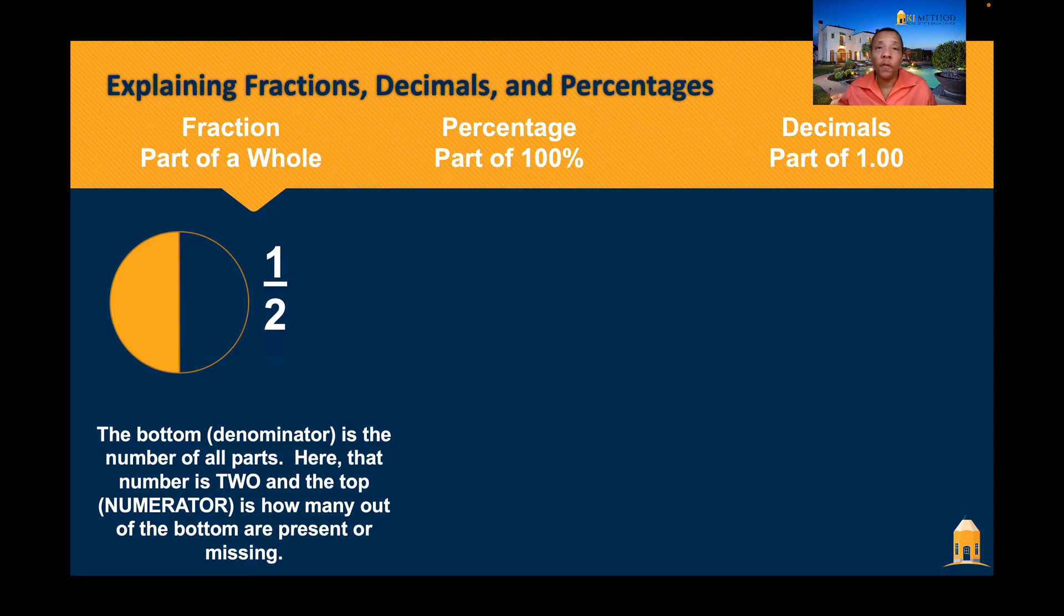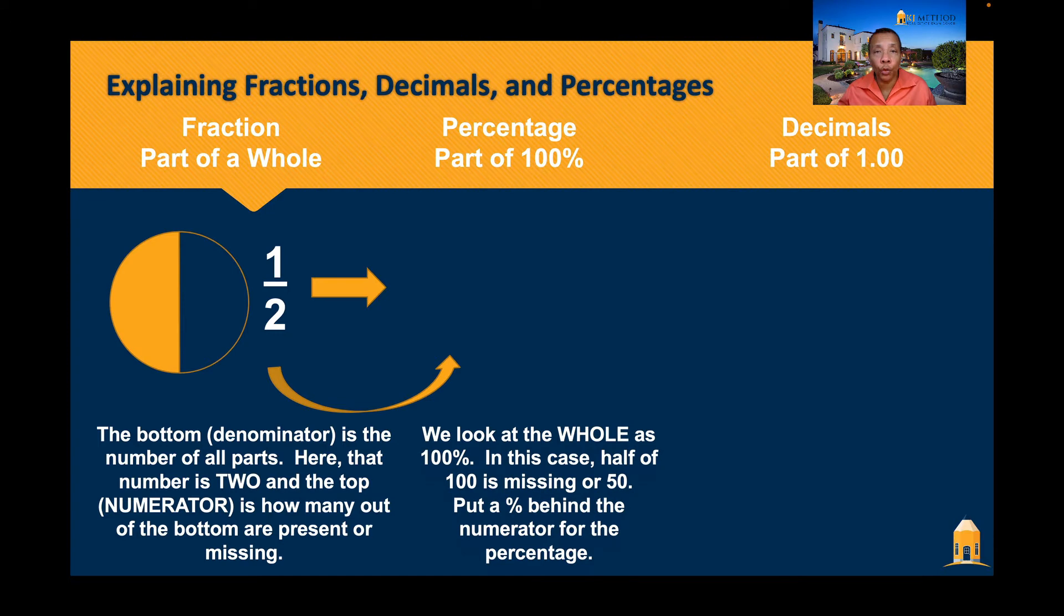Well then how do we convert that one half over to a percentage? Well a percentage is based upon 100%. So that means the whole is going to be 100 on the bottom. And then half of 100 would be 50. But when we're looking at percentages how do we then convert that to a percentage? Well all we do is take the top of the fraction and put a percentage behind it. Yep that's it. So 50 over 100 is the same as 50%.